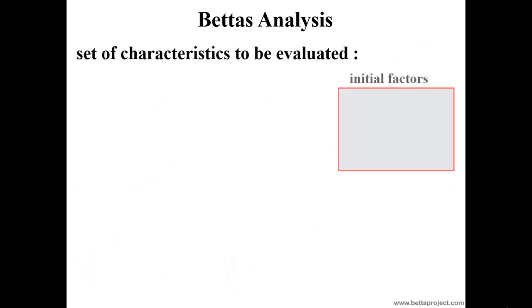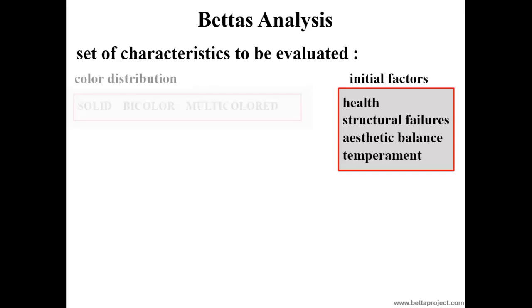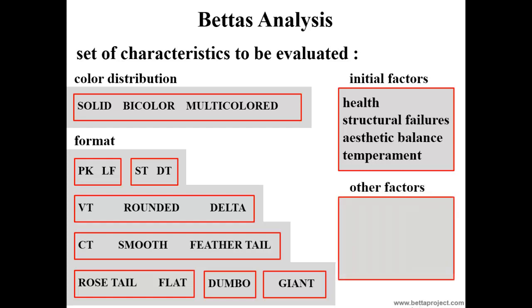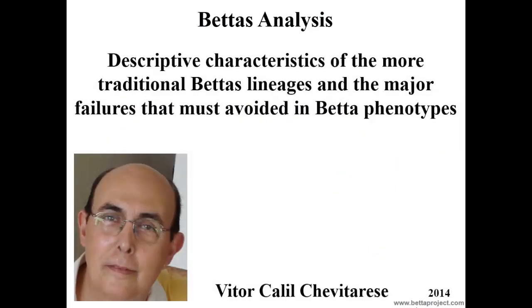As a final summary: the following points should be noted in any betta, preferably in this order. Initially, if it is healthy; if it has structural failures in the whole body and fins; if there is aesthetic balance between body size and the set of fins; and the betta's temperament. Then analyze the color distribution and the shape of the phenotype. However, if choosing a betta for a particular work, note additional factors related to your goal — such as whether the lineage is iridescent, pigmented, or both; if it has opacity; if it is dark or blonde. Here I close this presentation and I am sure this video will be quite useful.